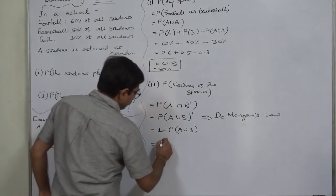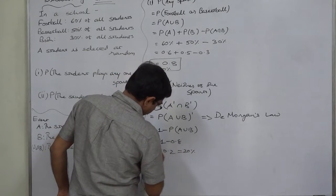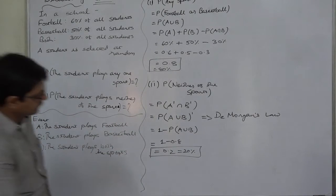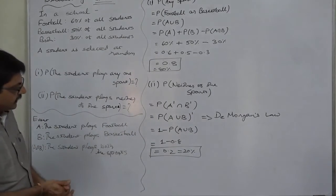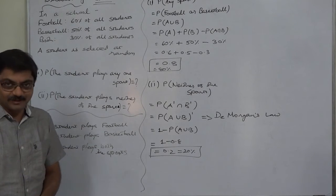That we have already found: 1 minus 0.8, that is 0.2 or 20%. So there are 20% chances, or only 20% chances, that the student selected at random plays neither of the sports. That's it, thank you very much.